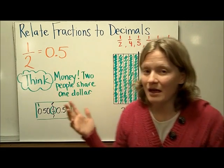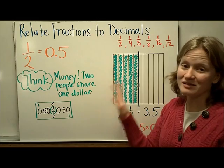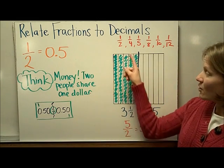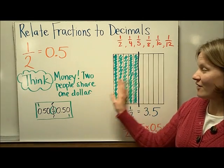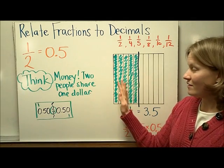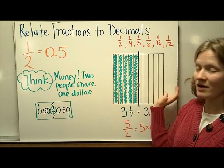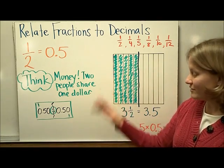So looking at that at a 100 grid, or base 10 blocks, we can see that if we divide the flat in half, we would have 5 tenths, or 5 rods, on this side. So 1 half of the 100 grid would be 5 tenths.